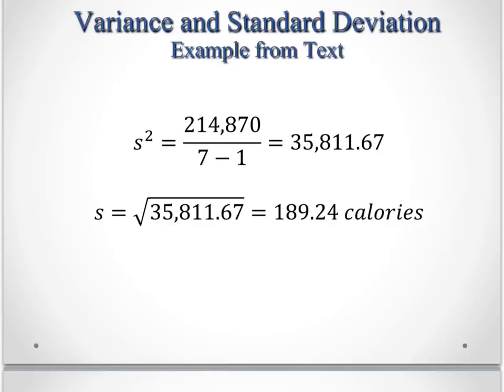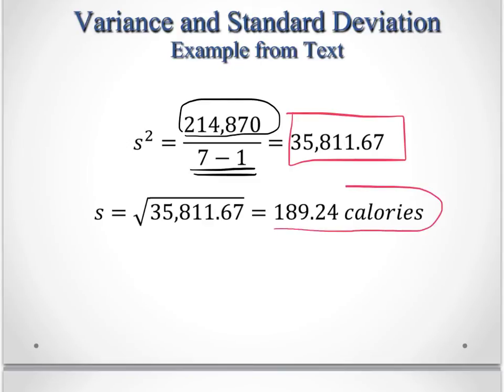Then we'll take that sum of all those deviations, and we'll divide it by n minus 1. That gives us a variance of 35,811.67. And then we'll take that square root, and we'll get a standard deviation, 189.24 calories.